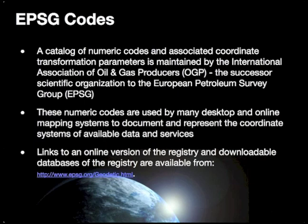One shorthand method for labeling specific coordinate reference systems is using EPSG codes, which stand for the European Petroleum Survey Group. That group has since been replaced by the International Association of Oil and Gas Producers as the group that maintains this catalog of numeric codes, which are used broadly in many desktop and online mapping systems as a shorthand to refer to specific projections or coordinate reference systems. You can access an online registry of these data through the link provided in the lecture notes.